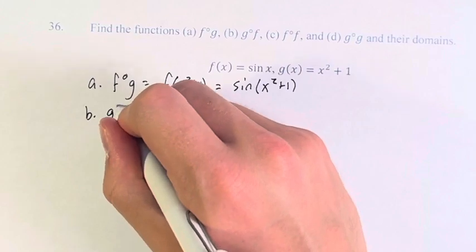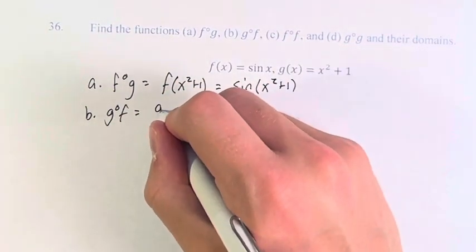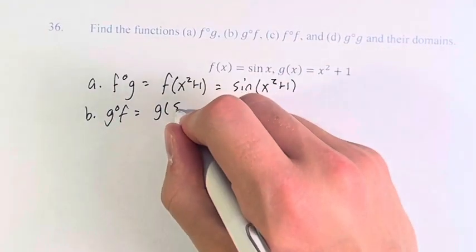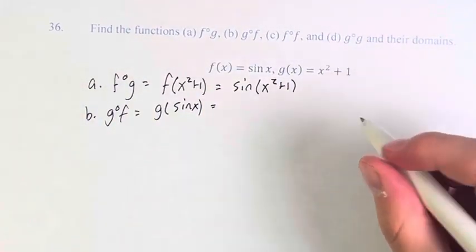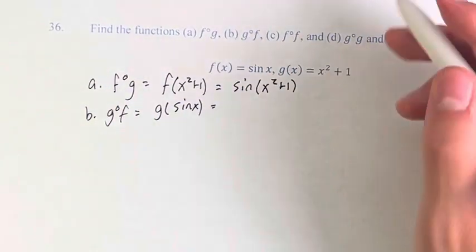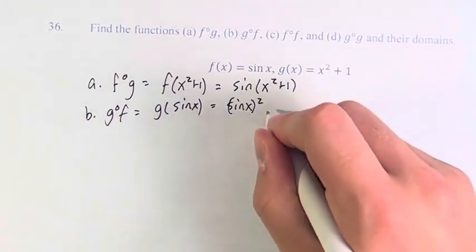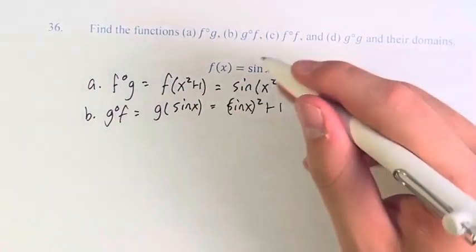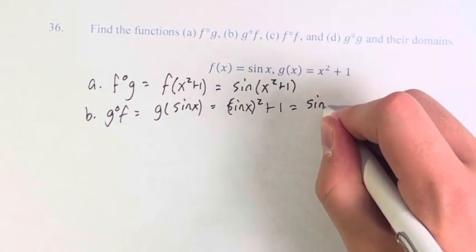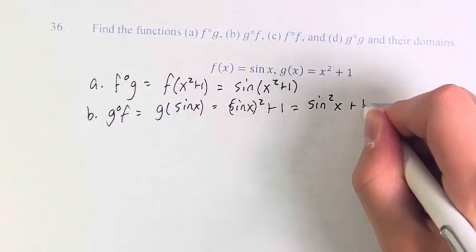For b, we have g of f. This is g of whatever f of x is, sine of x. Sine of x squared plus 1. Plugging in sine of x into g, this just gives us sine squared x plus 1.